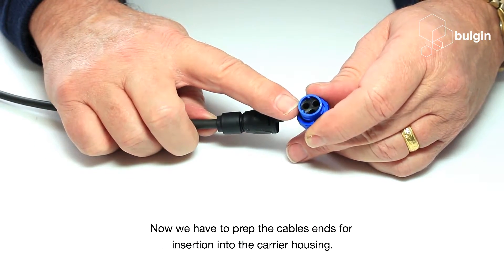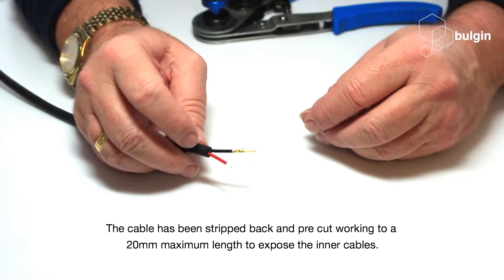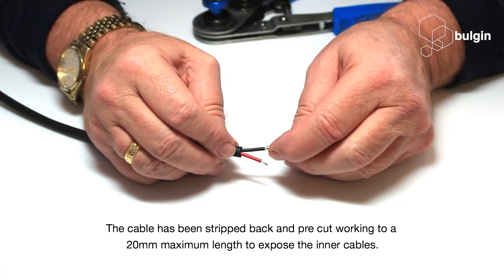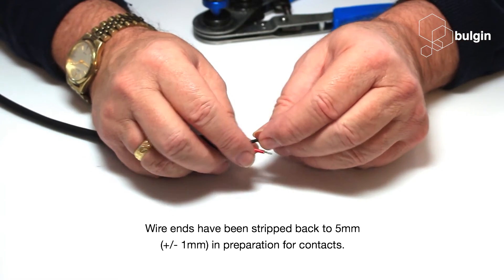Now we have to prep the cable's ends for insertion into the carrier housing. The cable has been stripped back and pre-cut working to a 20mm maximum length to expose the inner cable.